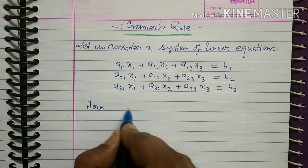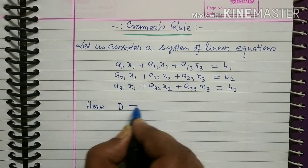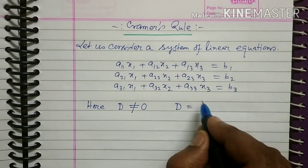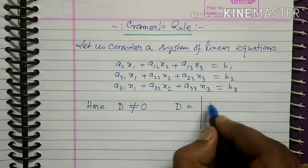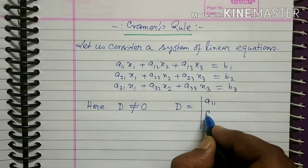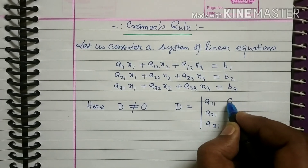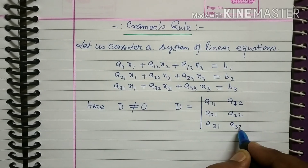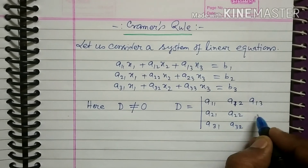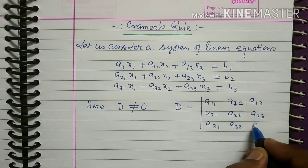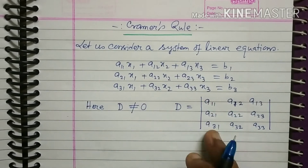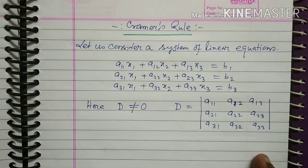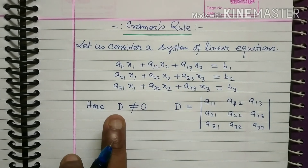Here, D should not be equal to zero. What is D? D is the determinant formed by the coefficients of x1, x2, and x3 — that is, the determinant with elements a11, a21, a31 in the first column, a12, a22, a32 in the second column, and a13, a23, a33 in the third column. This D should not be zero.